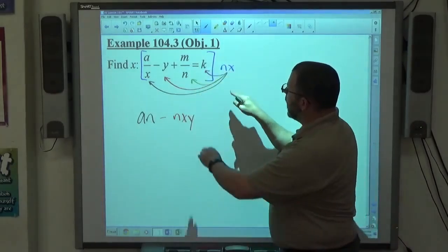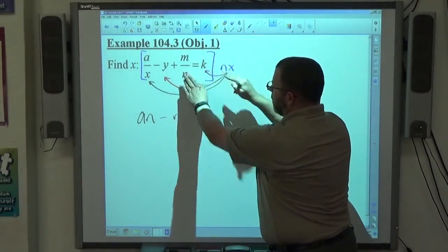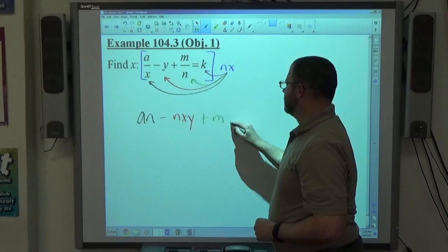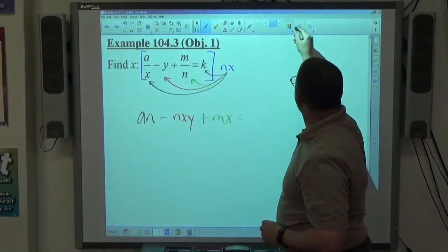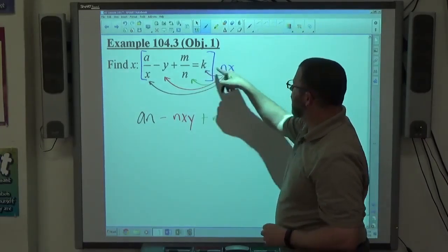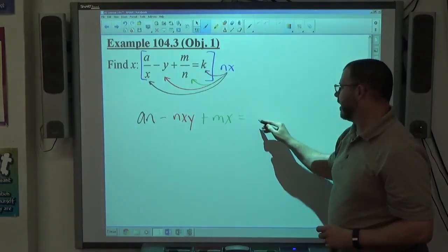Now, when I do NX times M over N, the N's cancel, M times X makes positive MX. And when I do NX times K, there's no fractions there, so I'm just going to get KNX.